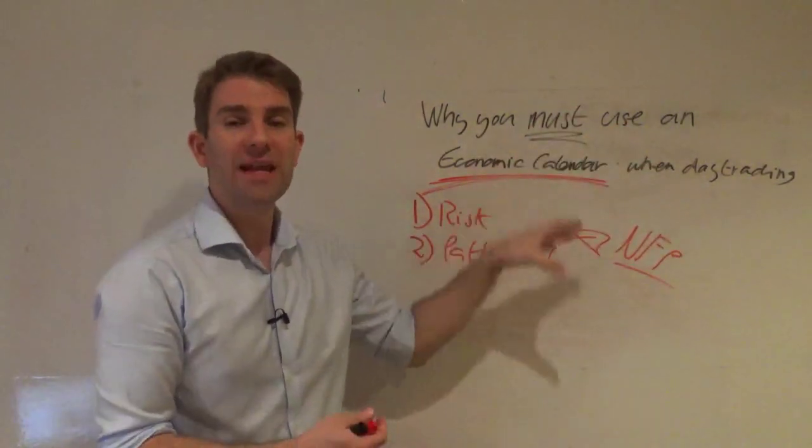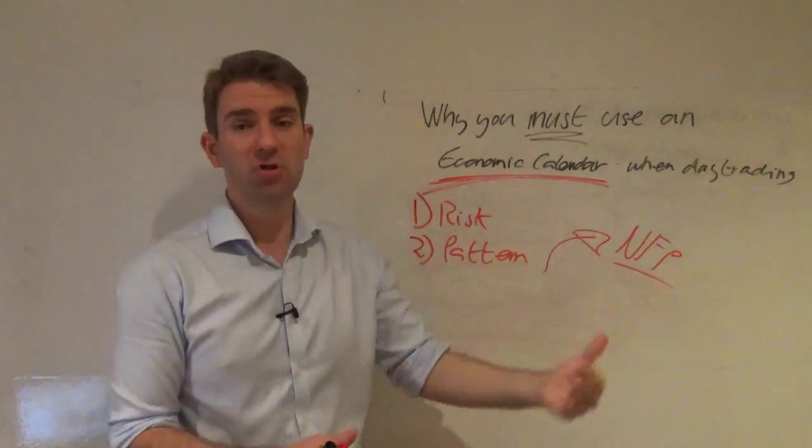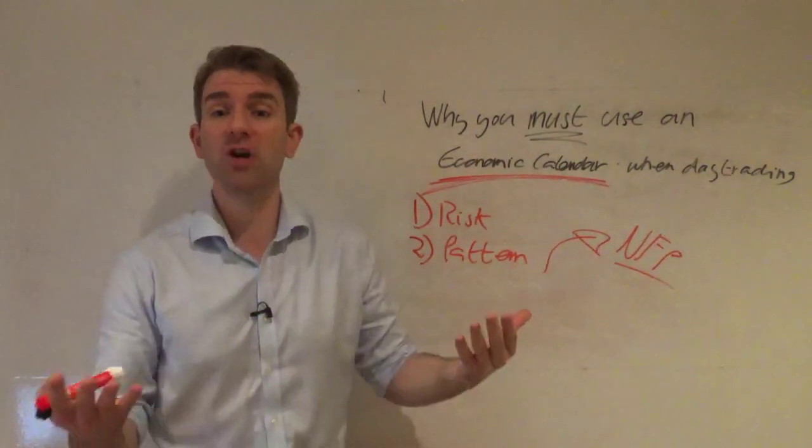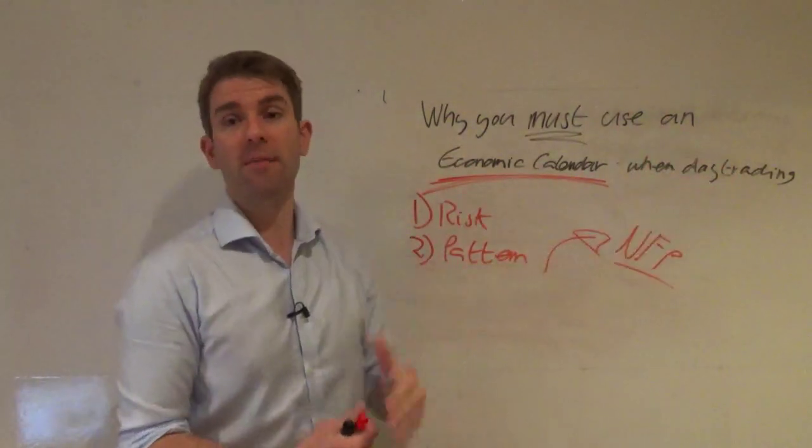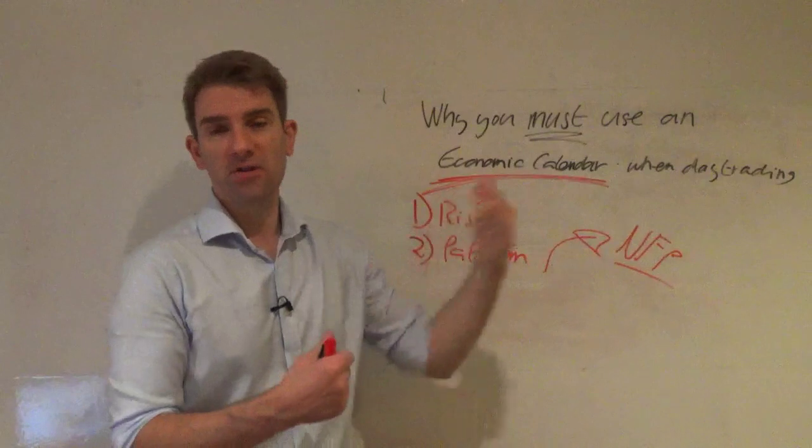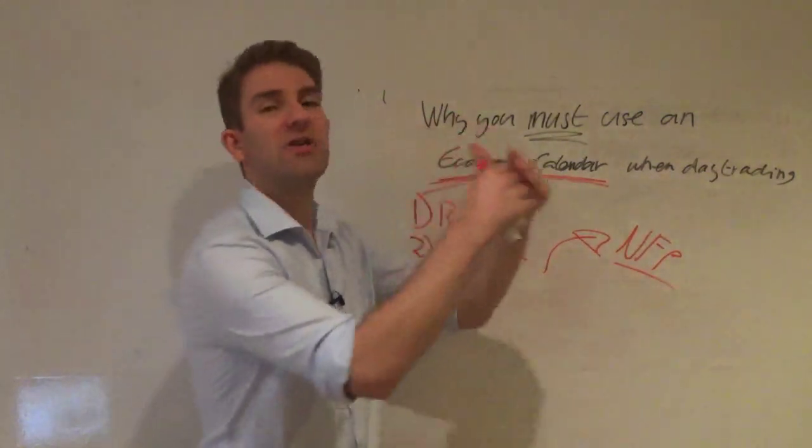And you have to take into account as a trader, maybe that means you don't trade breakouts if it's range bound before your non-farm payrolls. Maybe you don't try to look for momentum. Maybe you look for mean reversion with stuff coming back to a VWAP, look for extensions to short into or buy into as opposed to kind of looking for breakouts and continuations.